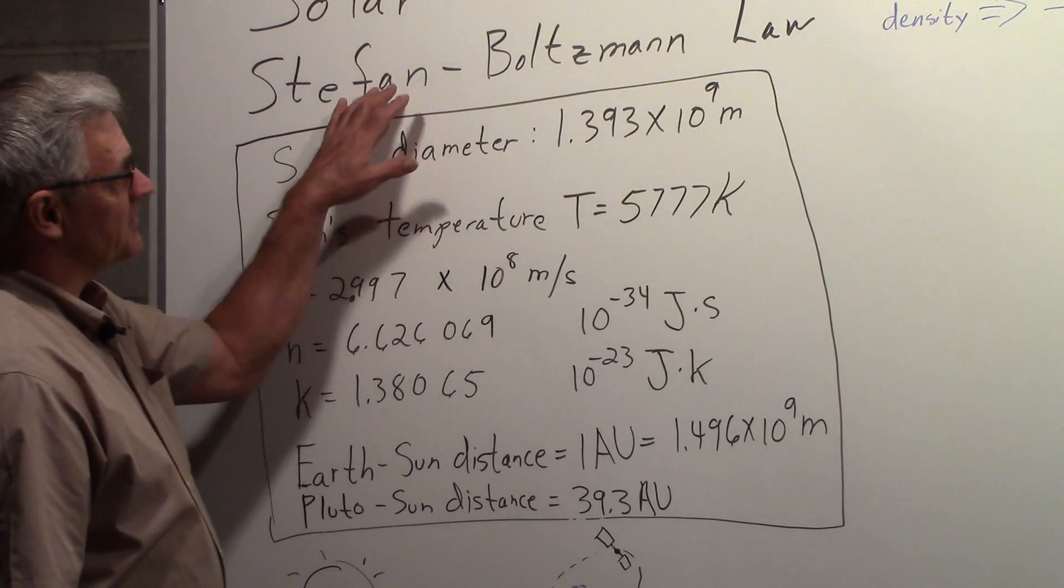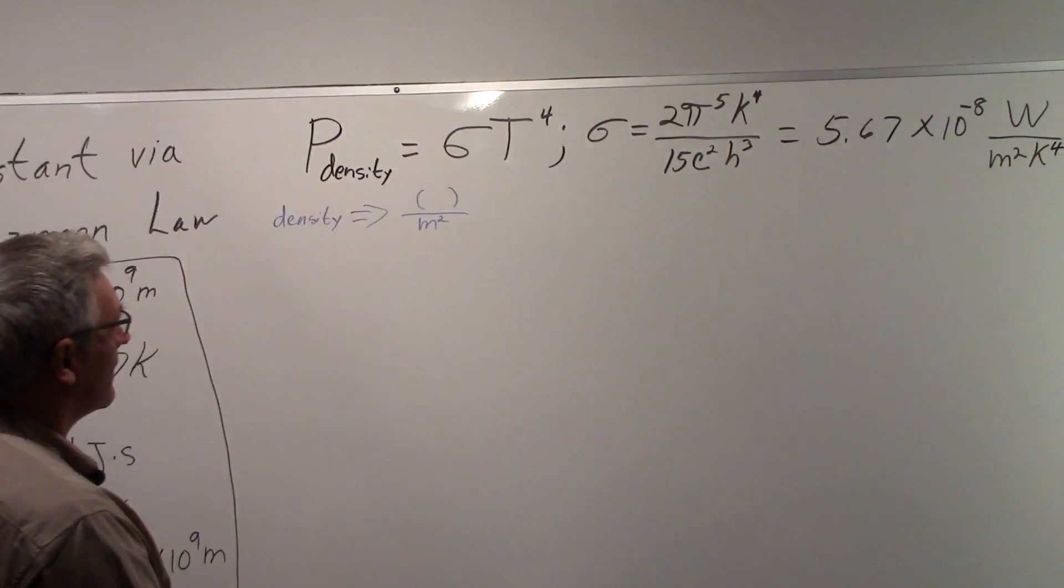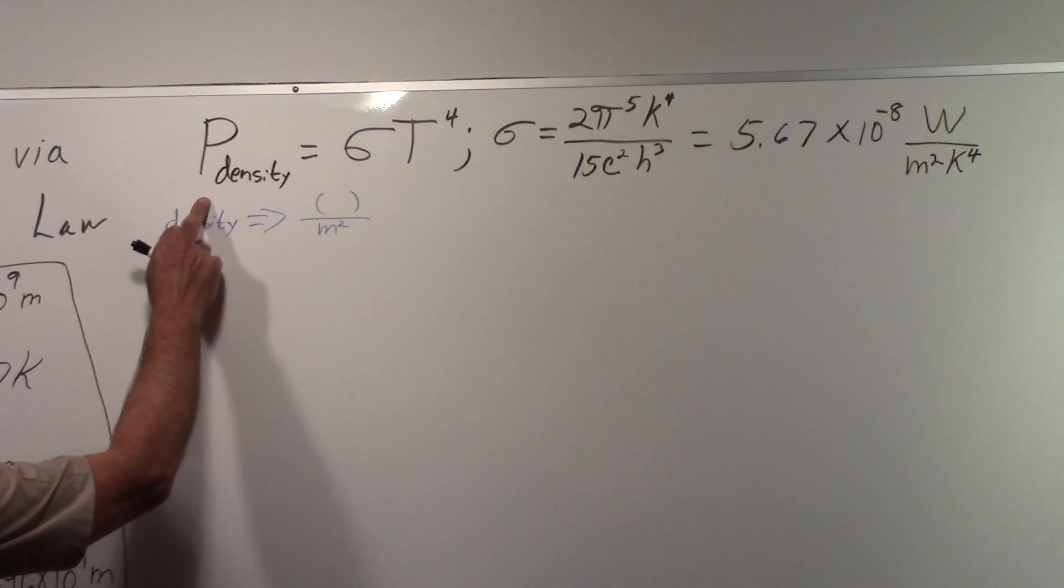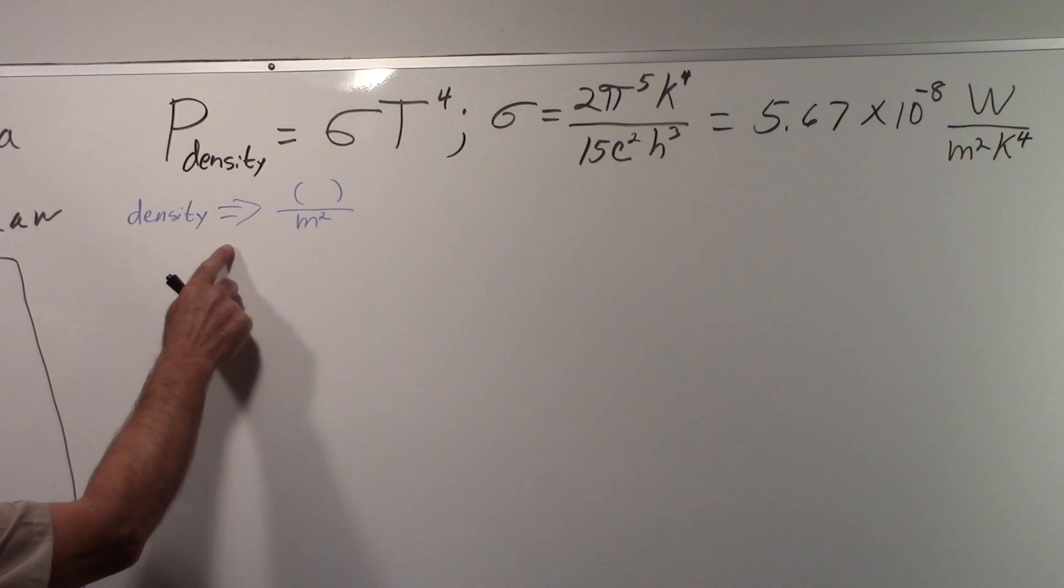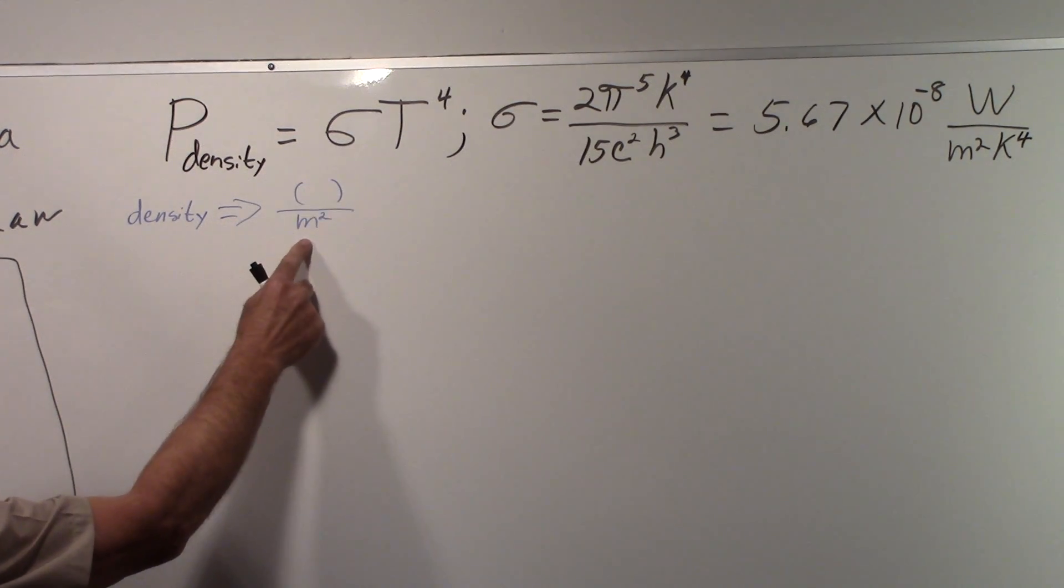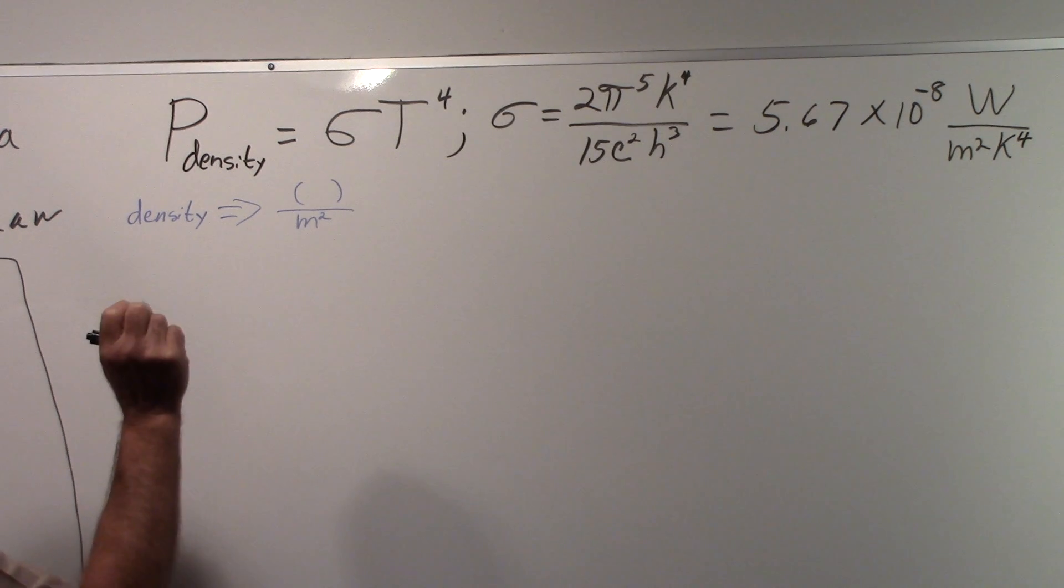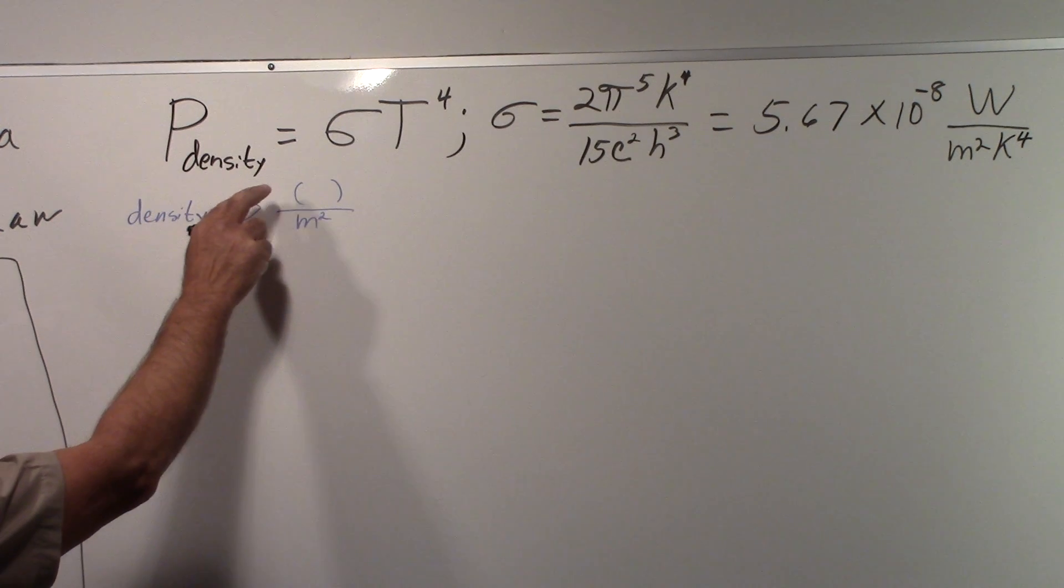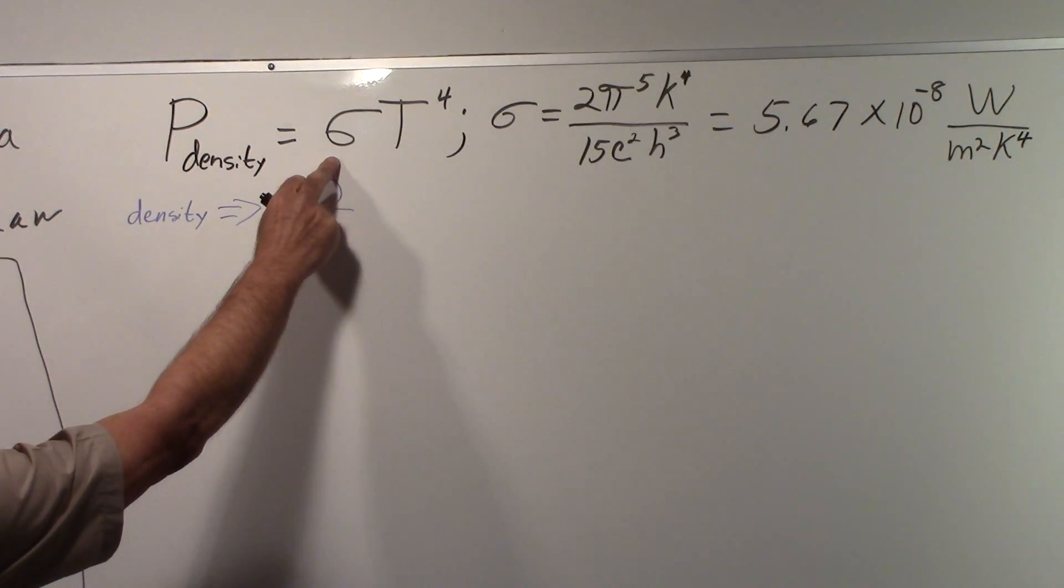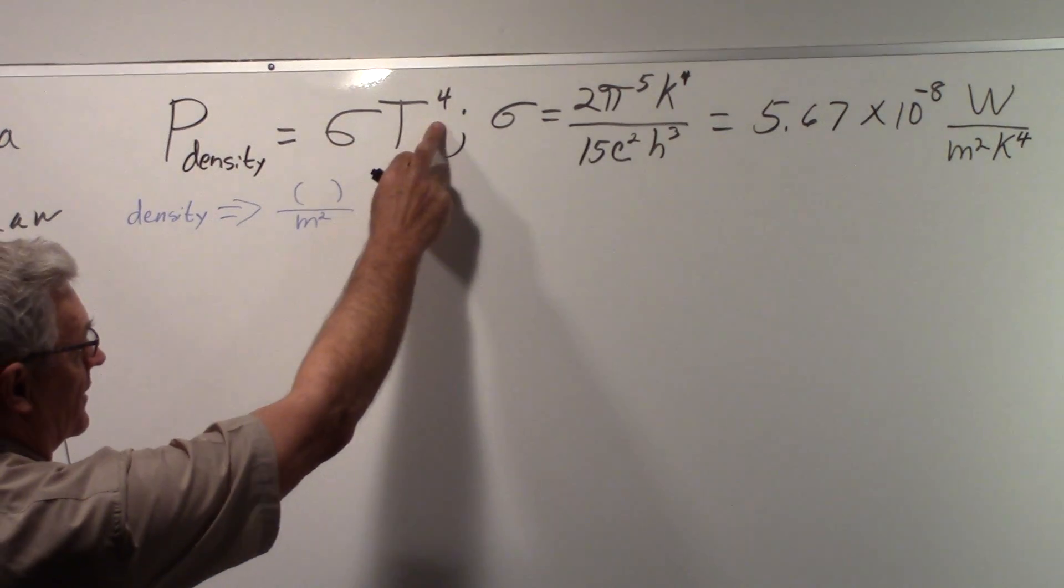All right, we're going to use the Stefan-Boltzmann law, and I've written that down here. We're talking about a power density. And by density here, I mean something per meter squared, not density in the normal way that you think per unit volume. So it's per surface area. And the sigma here is the Stefan-Boltzmann constant. T is the temperature, and it's raised to the fourth power.